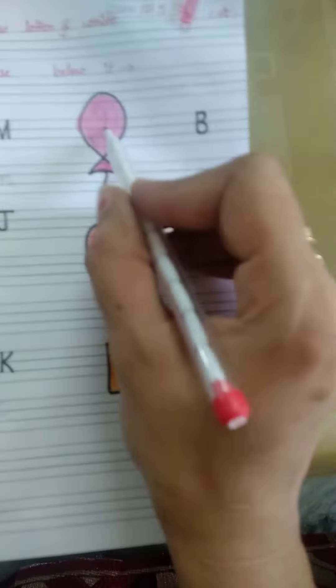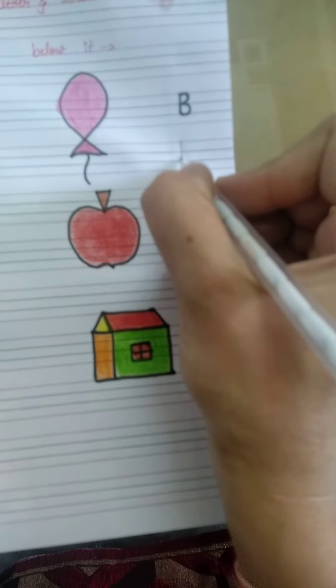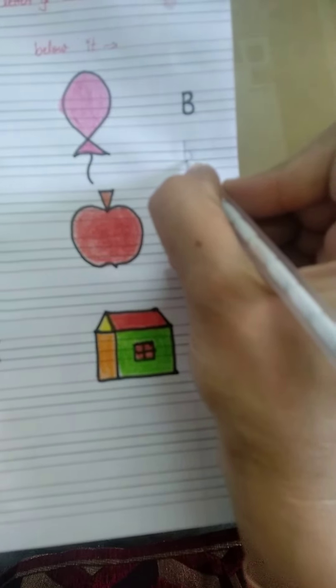What is it? B for Balloon. So you will write here letter B but small letter. J.